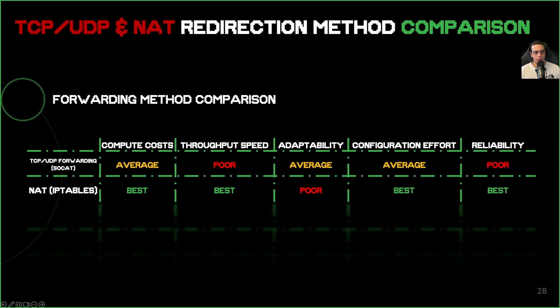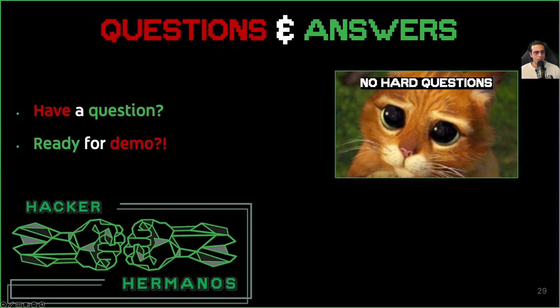TCP and UDP forwarding can be achieved in many ways — NAT and TCP forwarding via SOCAT are two of the options, and they're not the same. I've made some relative comparisons here that I'd be glad to discuss with you in the comments. Please leave any questions in the comments. Otherwise, let's check the rest of the videos in this playlist where we'll go through the different ways to set up C2 redirection.